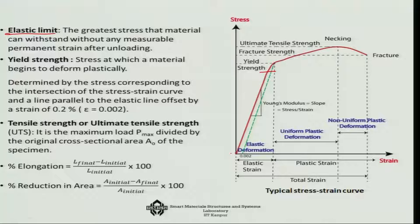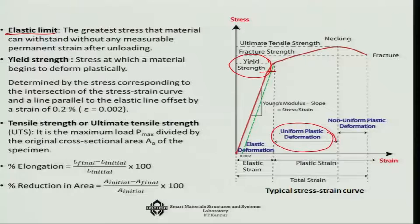Beyond the elastic limit comes the yield strength point. Beyond the yield strength, if you deform the material, it will start to deform plastically. That means if you start to unload beyond that point, there will be some amount of permanent deformation remaining in the system. The yield strength position is very important because it marks the onset of plastic deformation. As you increase the load beyond the yield strength level, you observe uniform plastic deformation. If the load is increased further, a necking phenomenon starts, and the material proceeds to fracture.